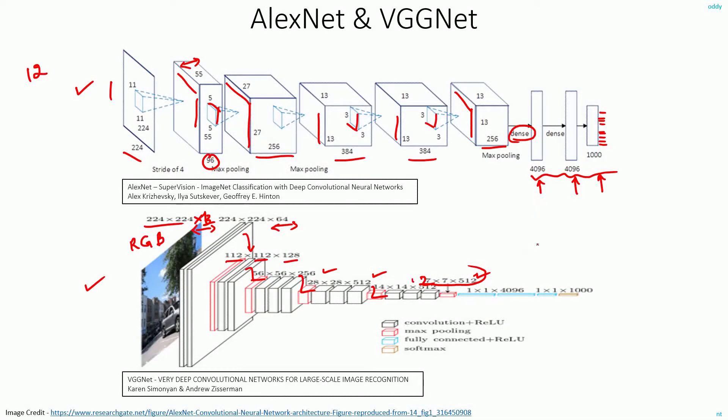Again, as in the AlexNet, they have 4096, 4096, and finally 1000. And at the end of the network, you have the softmax layer. This is how your typical simple convolutional neural networks will look like.